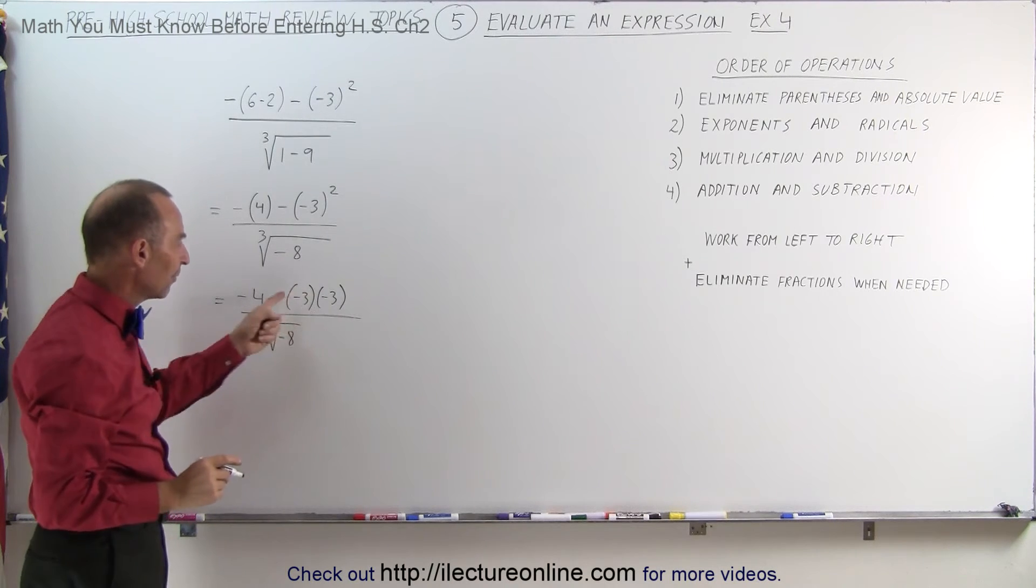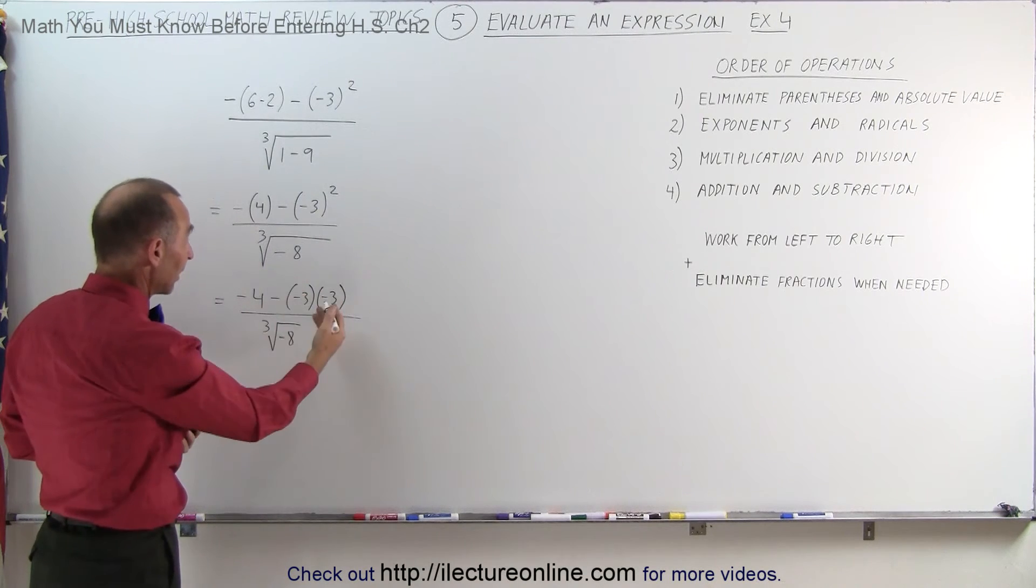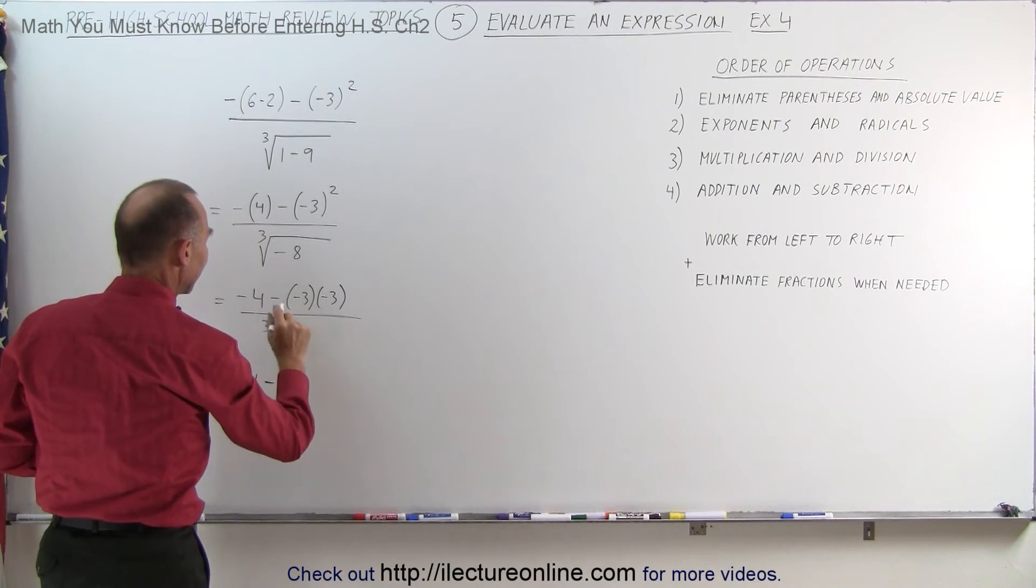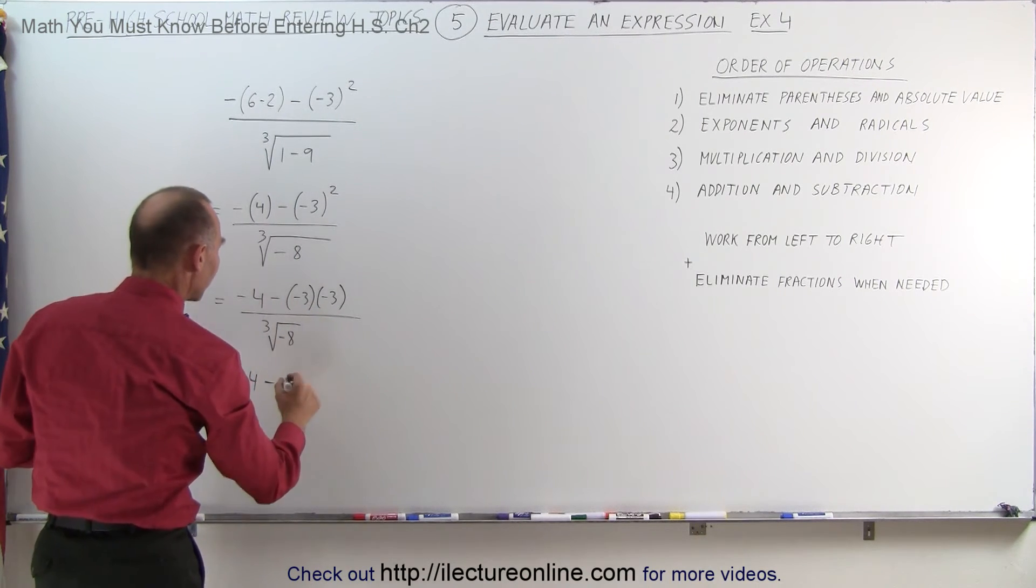So in the numerator, we can simplify that by multiplying negative 3 times negative 3, which is negative 3 squared. This is equal to minus 4 minus negative 3 times negative 3 is a positive 9.